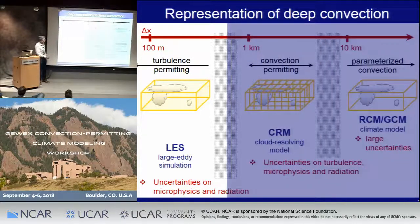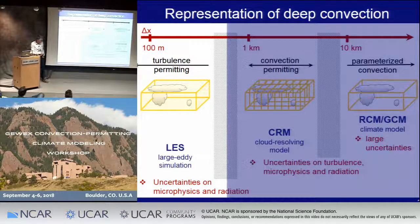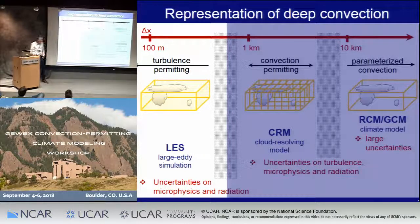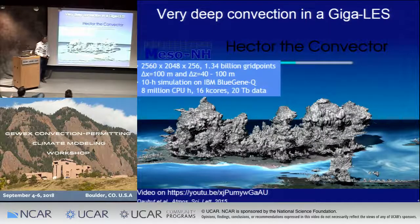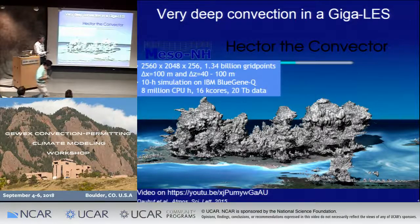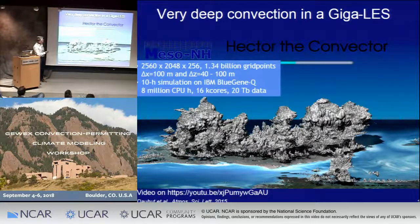In the domain of turbulence-permitting, I will show you some results from a large eddy simulation, for which the only physical parameterizations are the microphysics and the radiation. It's a simulation that I've already shown two years ago — a giga LES of Hector the Convector. All the simulations were run using the Meso-NH model, a model developed in Toulouse.